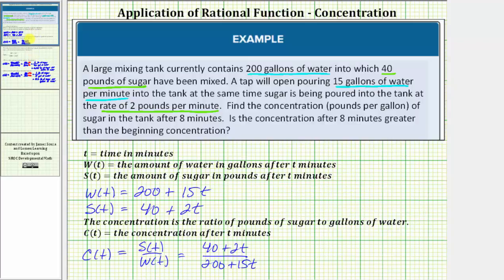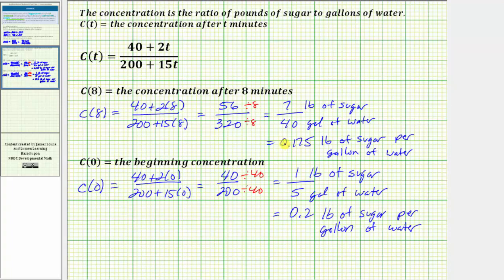The last question was: is the concentration after eight minutes greater than the beginning concentration? It's easier to compare concentrations as decimals. The concentration after eight minutes is 0.175 pounds of sugar per gallon of water. The beginning concentration was 0.2 pounds of sugar per gallon of water. Because 0.175 is less than 0.2, the concentration after eight minutes is less than the beginning concentration.